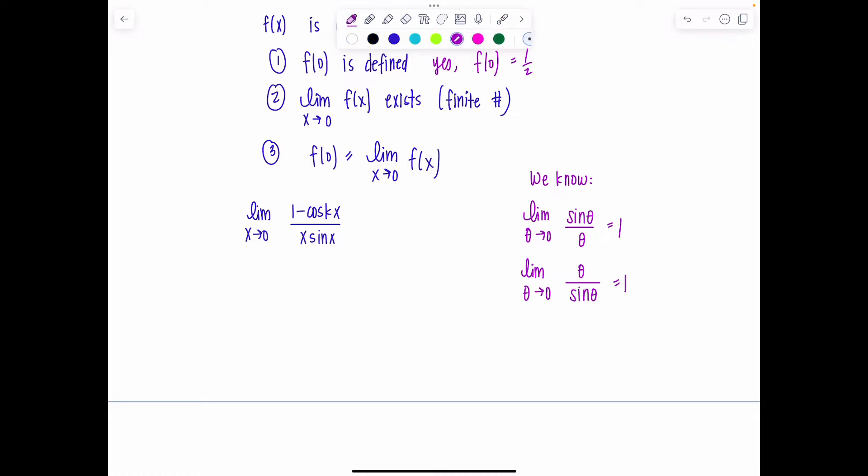Why? Because reciprocal of 1 is still 1. And then also we have one more limit formula: limit as theta goes to 0 of (1 - cos(theta))/theta equals 0. So I'm going to rely on these to help me evaluate this limit.